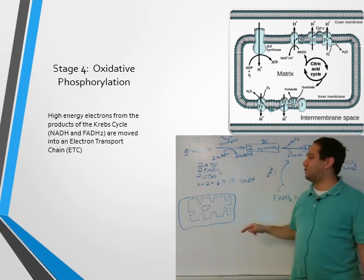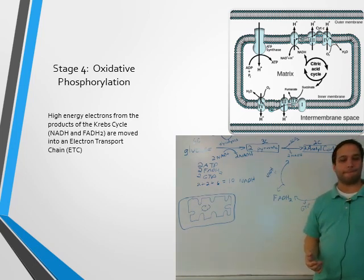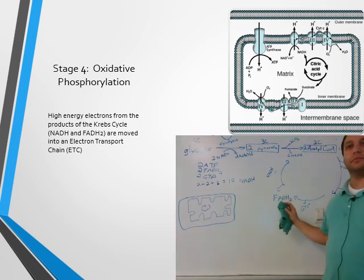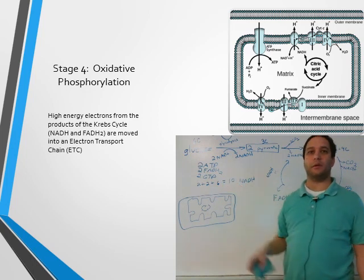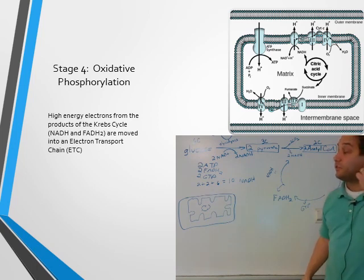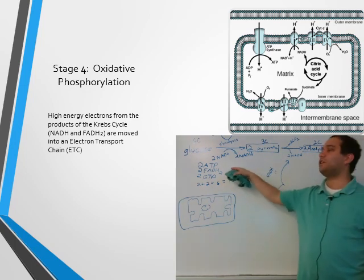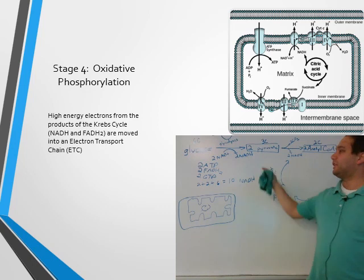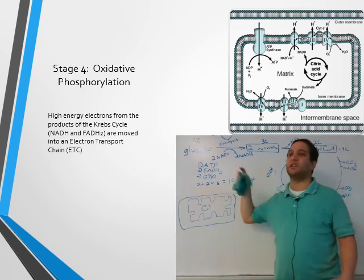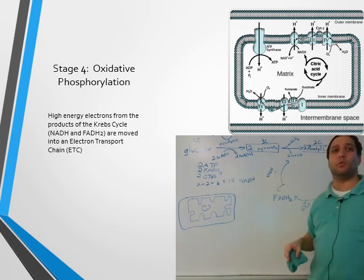Remember, FADH2 and NADH carry really excited electrons that want to do some work. These are the energetic electrons we're going to use in the next part. The ATP and the GTP have gone off to start building things on their own. We're getting ready to move these FADH2s and NADHs somewhere else.